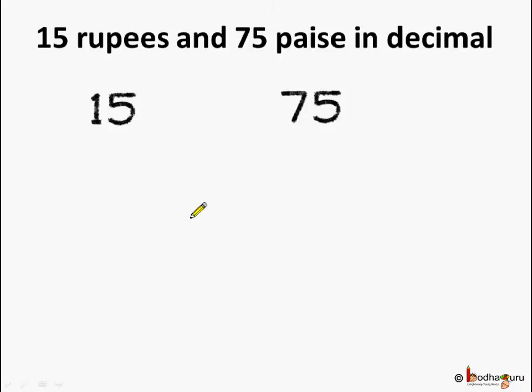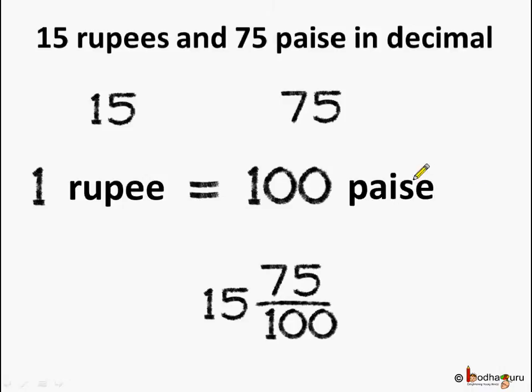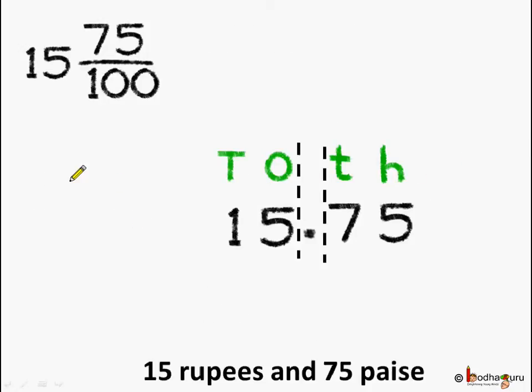Now, let's do another problem. Let's convert 15 rupees and 75 paise in decimal. We know 1 rupee is equal to 100 paise. That means, 75 paise means there are 75 parts out of the 100 parts. So, this means our decimal fraction should extend till 100th place.